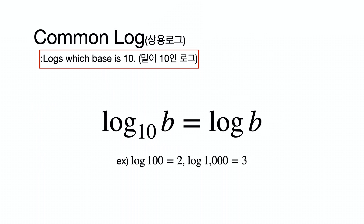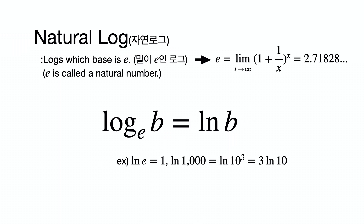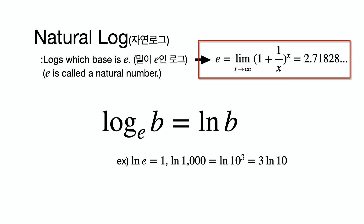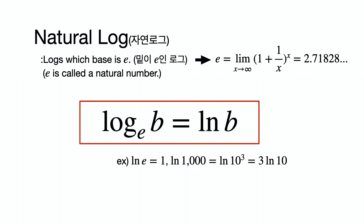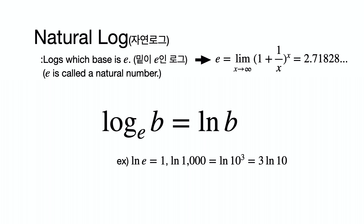A common log is a log whose base is 10. In the case of a common log, we do not write the base. So if you see a log form with the base missing, just assume the base is 10. There is also a special number e in mathematics. Its definition is the limit as x goes to infinity of 1 plus 1 over x, raised to the x power — an irrational number approximately equal to 2.718. When e is the base of a log, we write ln instead of log, so log base e of b is written as ln b.